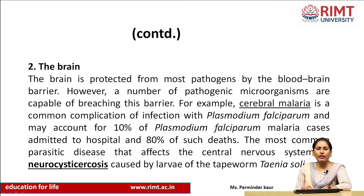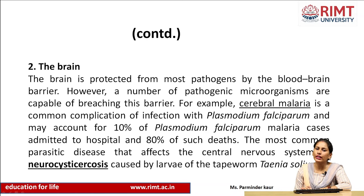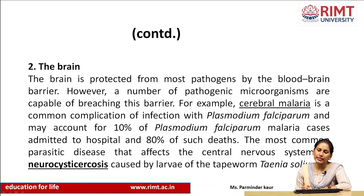Moving to the brain — as we know there is the blood-brain barrier, but many organisms can pass it. For example, cerebral malaria: malaria can reach the nervous system. It is a common complication of Plasmodium falciparum infection and may account for 10 percent of P. falciparum malaria cases admitted to hospital and 80 percent of such deaths. The most common parasitic disease affecting the central nervous system is neurocysticercosis, caused by Taenia solium — when the larva of Taenia solium enters the nervous system, this condition occurs.